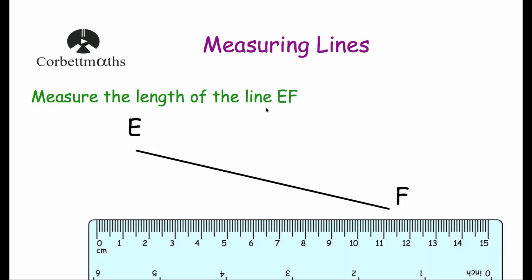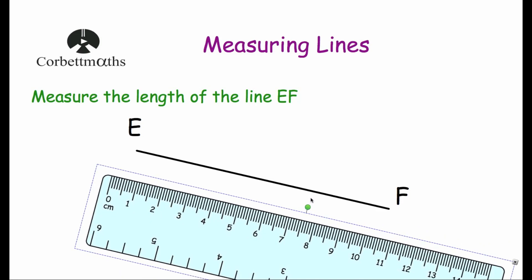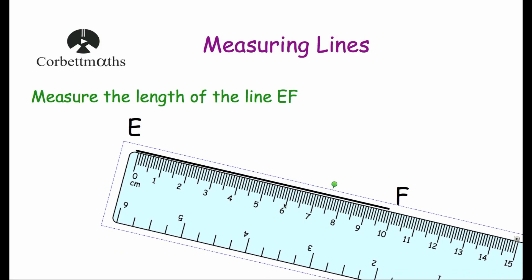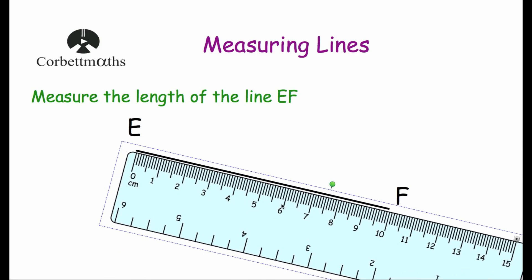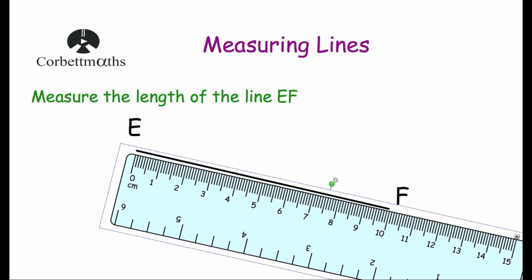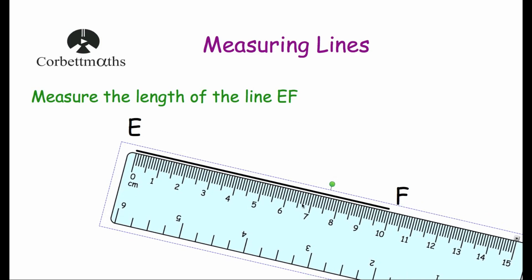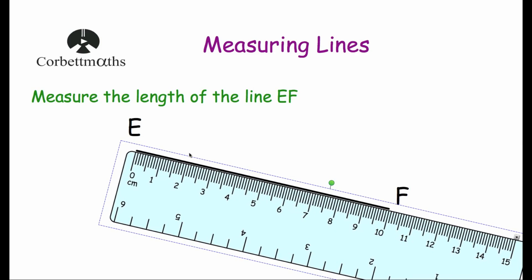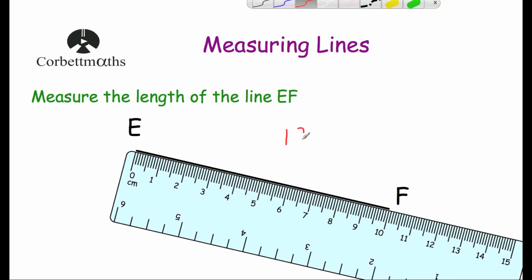Our next question says measure the length of the line EF. As you can see, EF is a diagonal line. So we're going to get our ruler and turn it so that it goes the same direction as our line — we need to make sure we do this perfectly. We then make sure the zero is lined up with the beginning of the line, and as you can see the line is 10 centimetres long — it starts at zero and reaches 10.